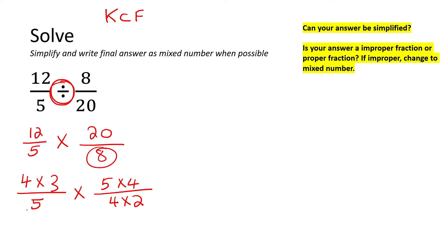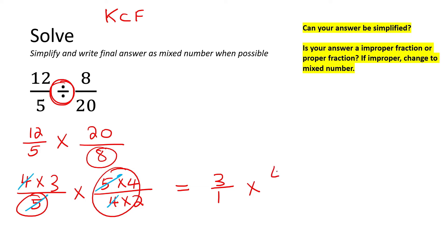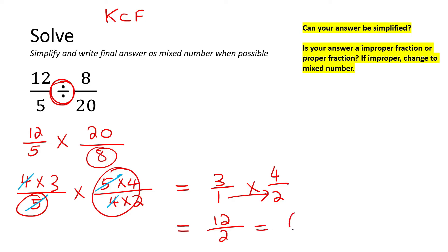This 5 and this 5 can cancel, and this 4 and this 4 can cancel. What we now have left over is a 3 at the top, then a 1 below it since there's nothing there, and then a 4 at the top and a 2 at the bottom. These numbers are nice and small, so we just multiply top by top and bottom by bottom. What is 12 divided by 2? Six.